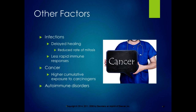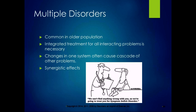Other factors contributing to problems in aging include infections, delayed healing because of a reduced rate of cell mitosis, and less rapid immune responses — all body systems are affected. Cancer risk increases because of higher cumulative lifetime exposure to carcinogens like the sun, smoke, and other agents. Autoimmune disorders become more prevalent as the immune system is not working at its optimum. Multiple disorders are common in the older population, and integrated treatment for all interacting problems is necessary. Changes in one system often cause a cascade of other problems, and synergistic effects from different medications can cause their own problems.